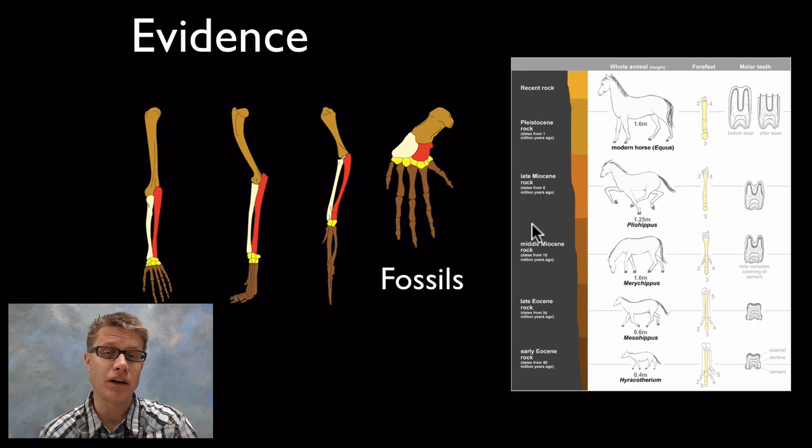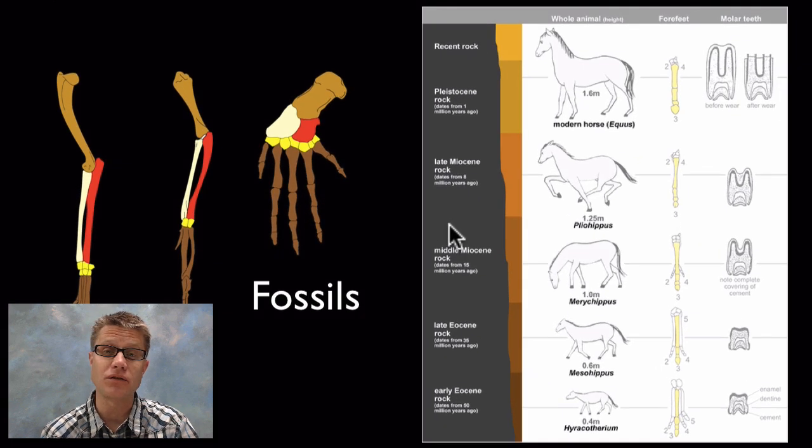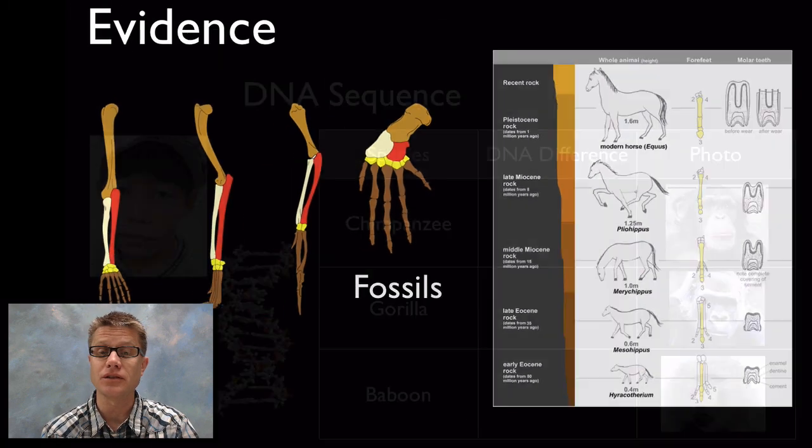And you could also see it in the fossil record. In the rock itself you could see fossils changing over time. So horses, for example, as they moved out onto the plains, got larger and larger and larger, and you could see the change in their fossils.